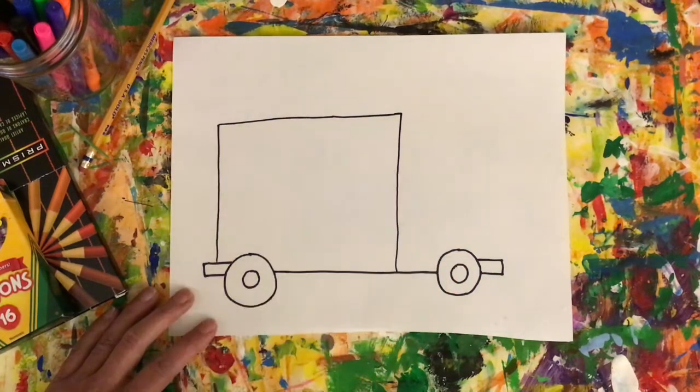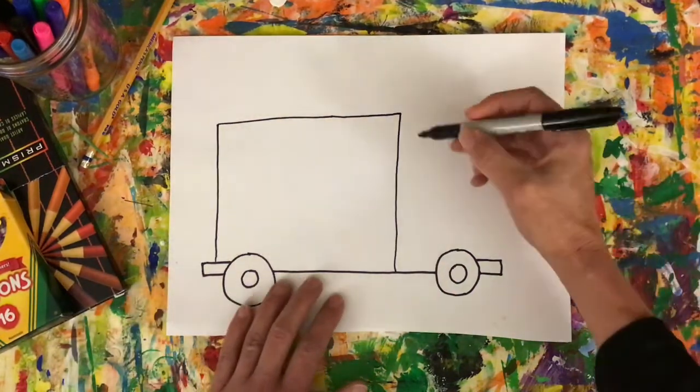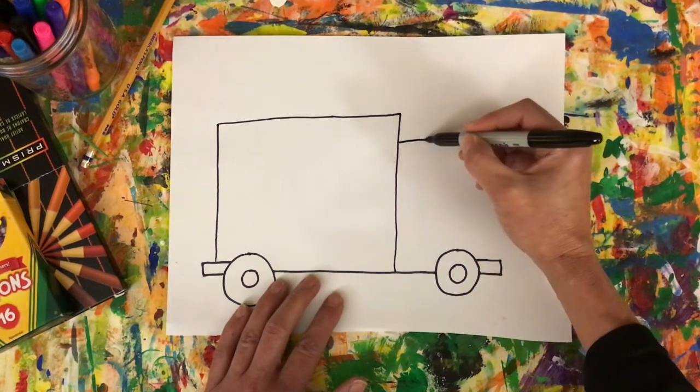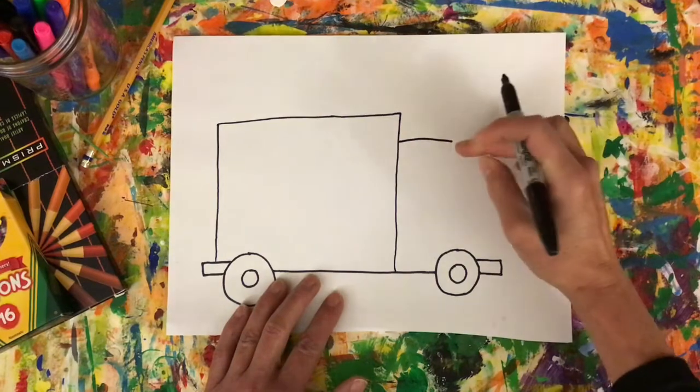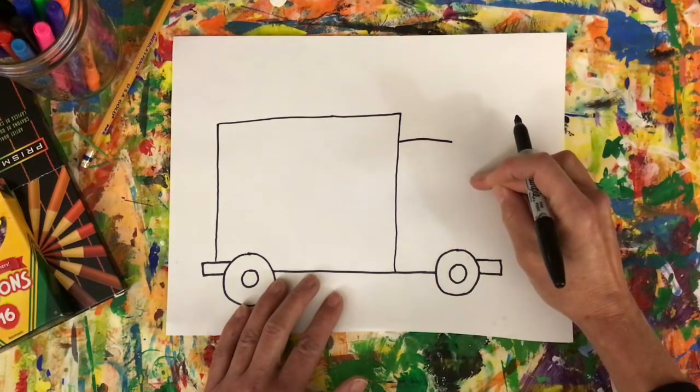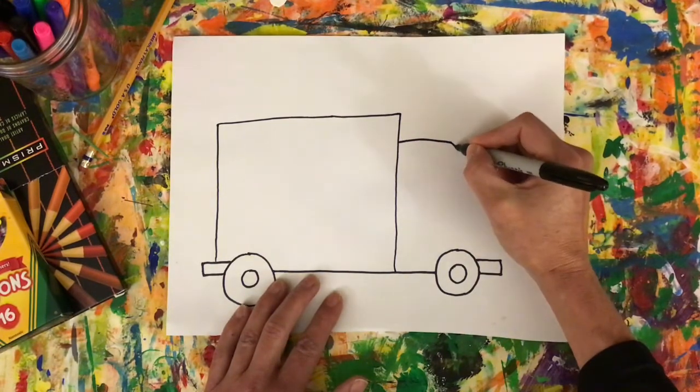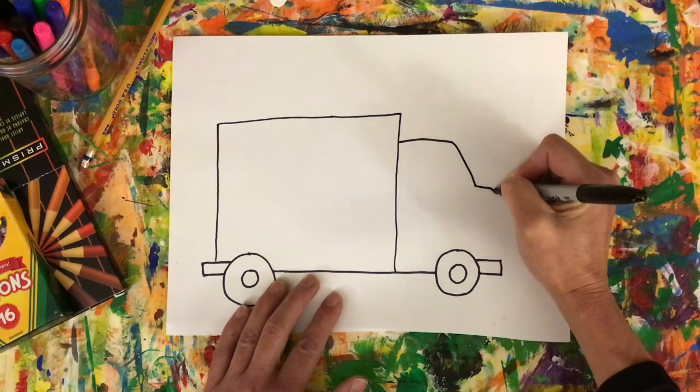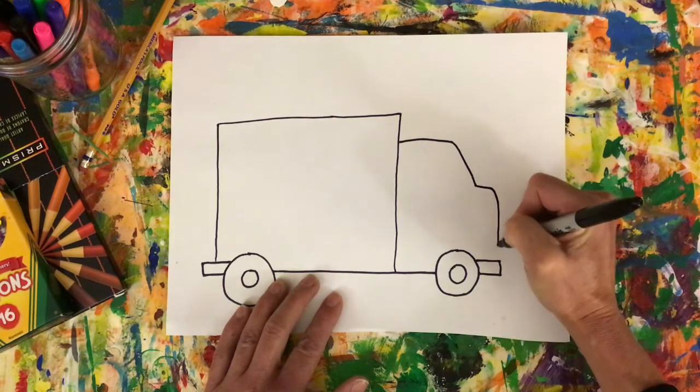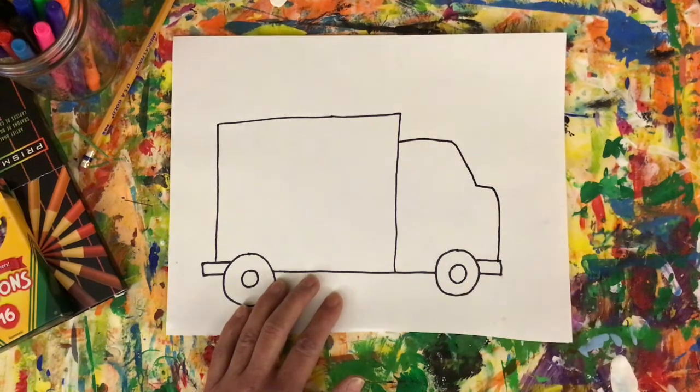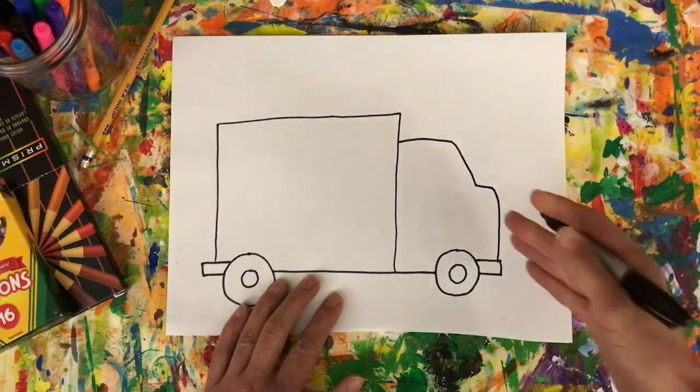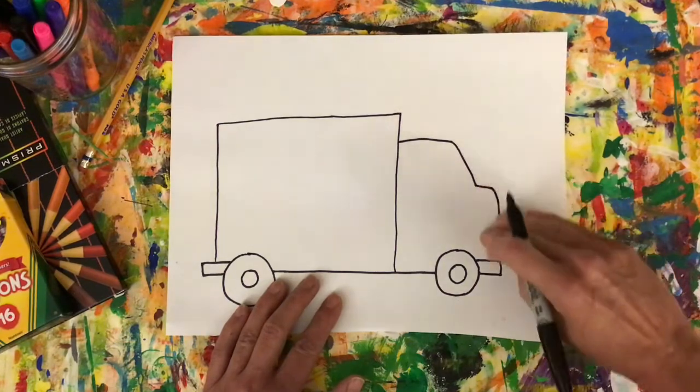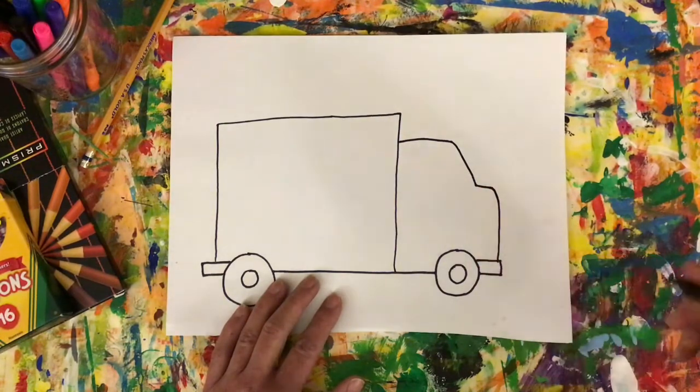Now I can go ahead and do the cab. The cab's going to be a little shorter and now I'm going to come down on a diagonal line for the windshield, out a little bit for the engine and bring it down. There's all sorts of different types of trucks so if yours doesn't look like that, that's okay. Some trucks actually are completely flat on the front and that works as well.